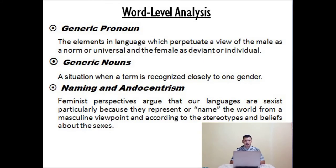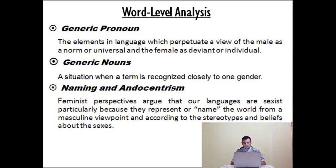The first element in feminist stylistics is word level analysis, which consists of three sub-elements. The first is generic pronouns — this is the element in language that perpetuates the view of male as a norm or universal and female as deviant. The second is generic nouns — a situation when a term is recognized closely to a gender. The last is naming and endocentrism — in feminist perspective, there is language sexism particularly because it names or represents the world from masculine or feminine viewpoints.